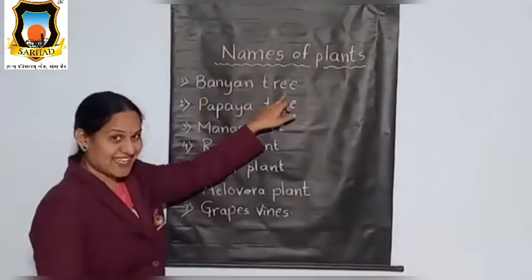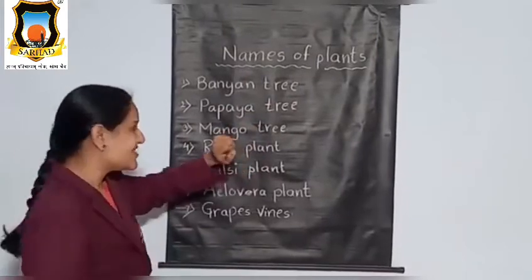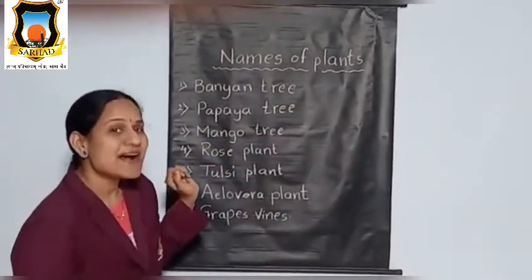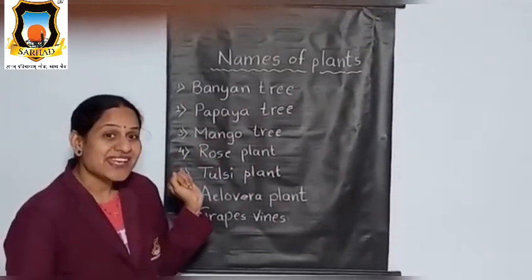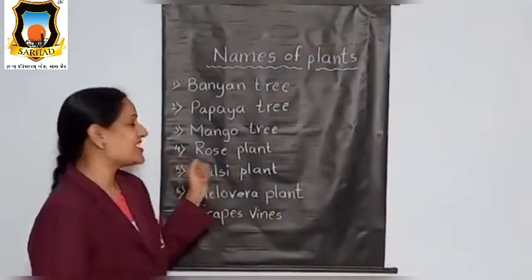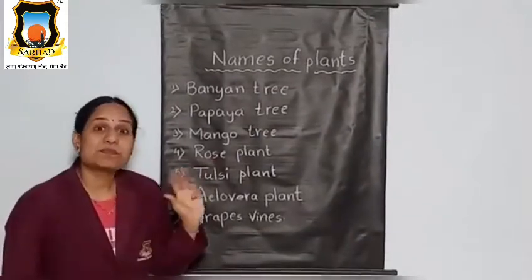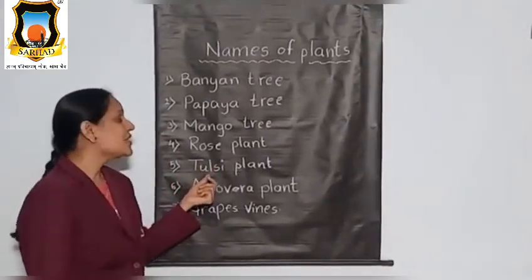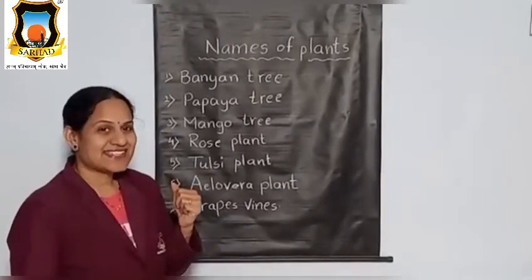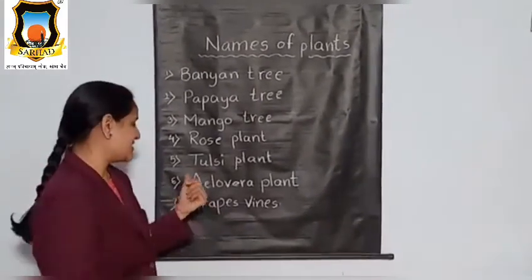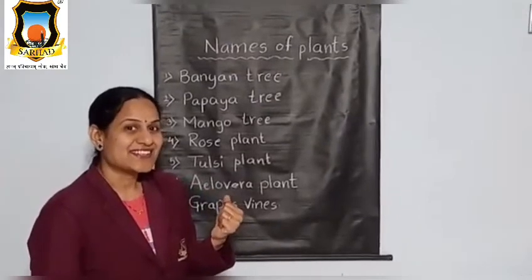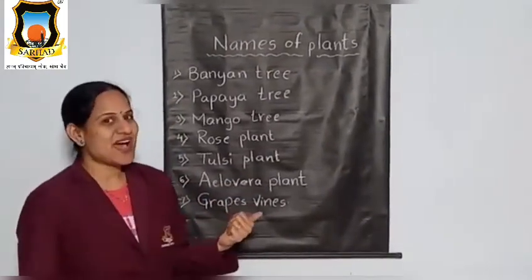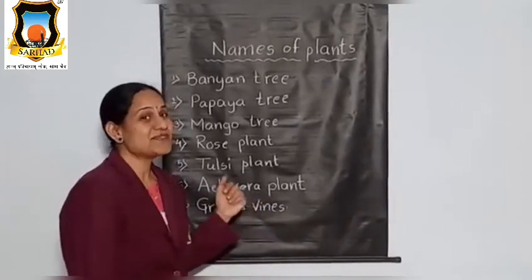Banyan tree. Banyan tree. Papaya tree. Papaya tree. Mango tree. Mango tree. Rose plant. Rose plant. Tulsi plant. Tulsi plant. Aloe vera plant. Aloe vera plant. And grapes vines. Grapes vines.